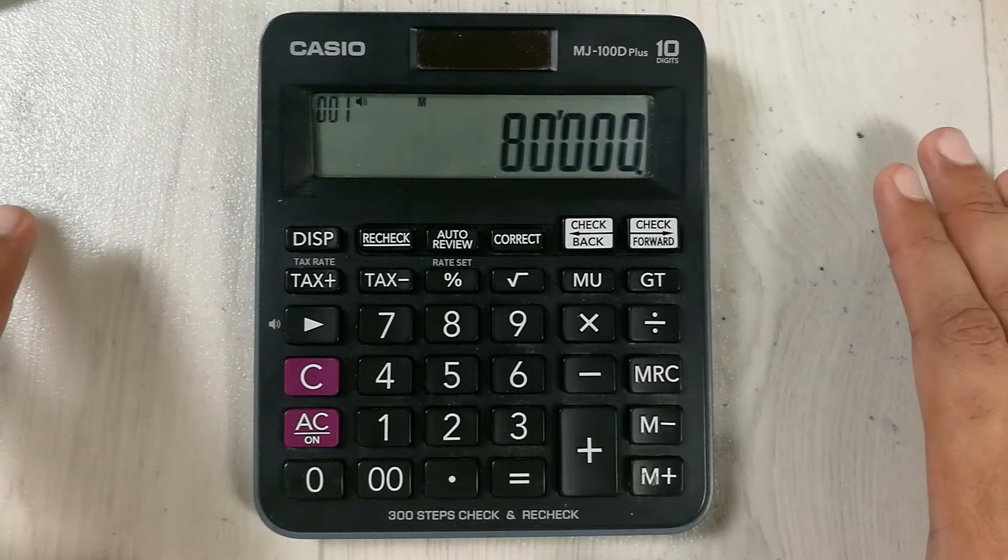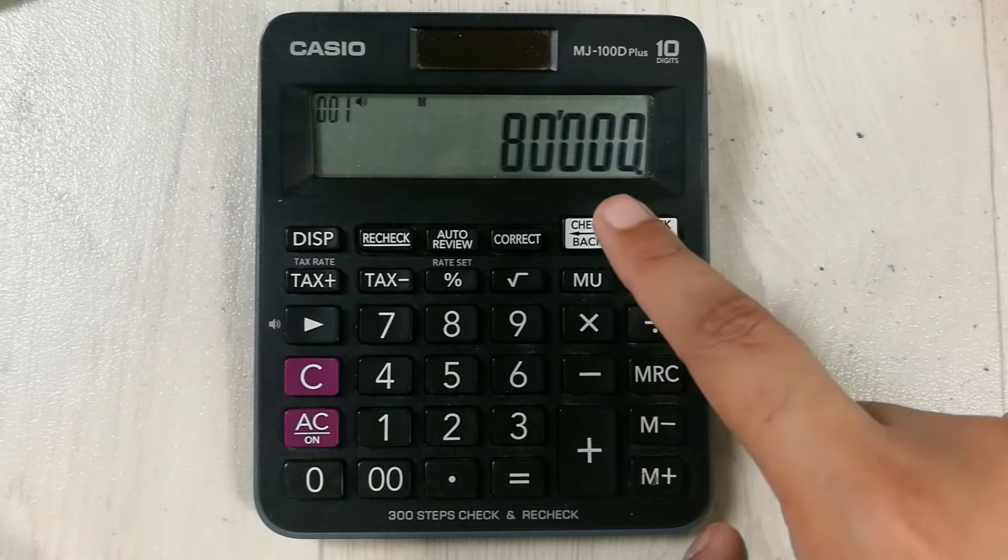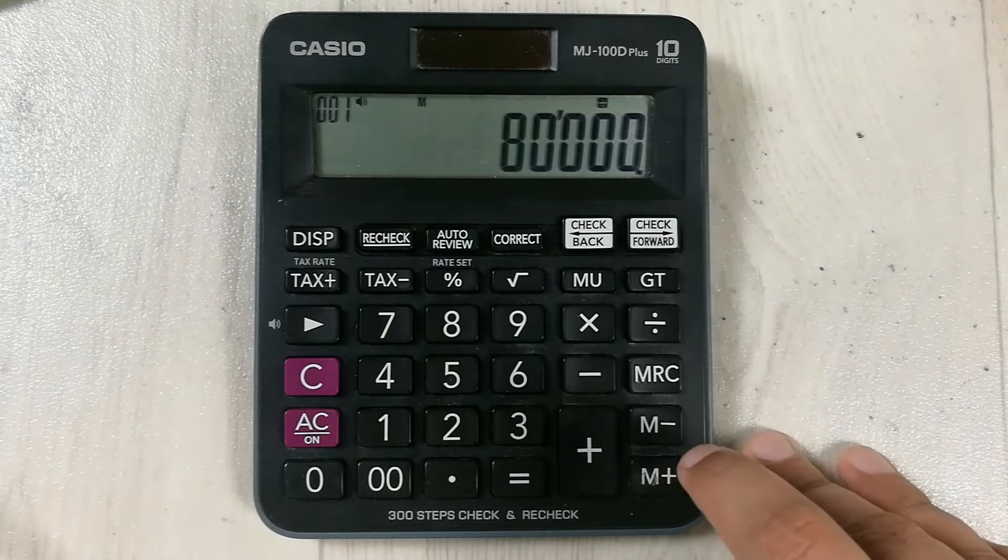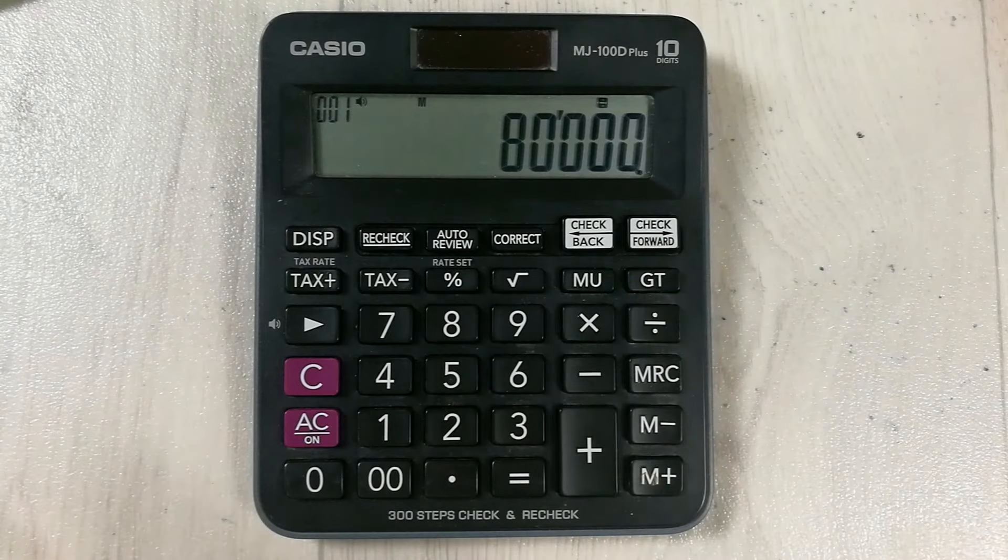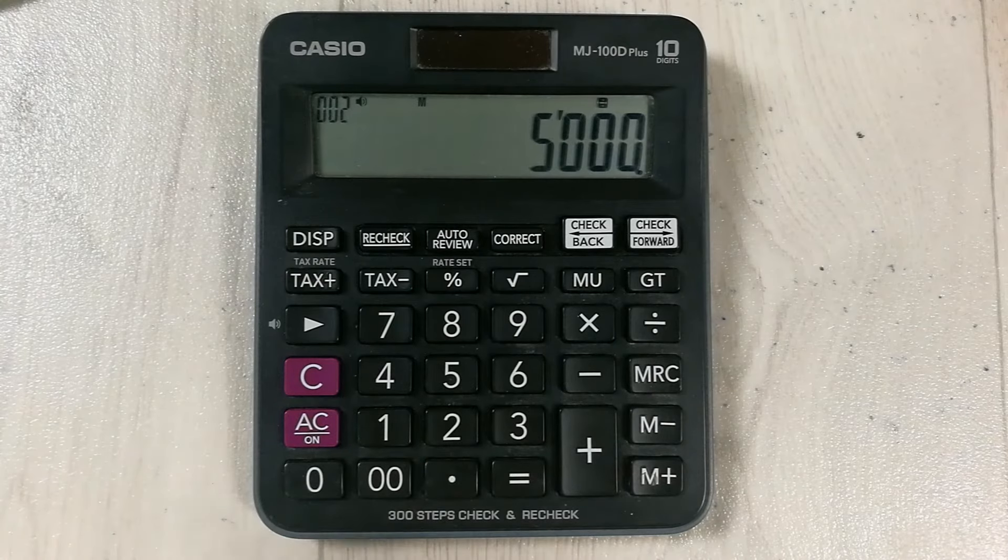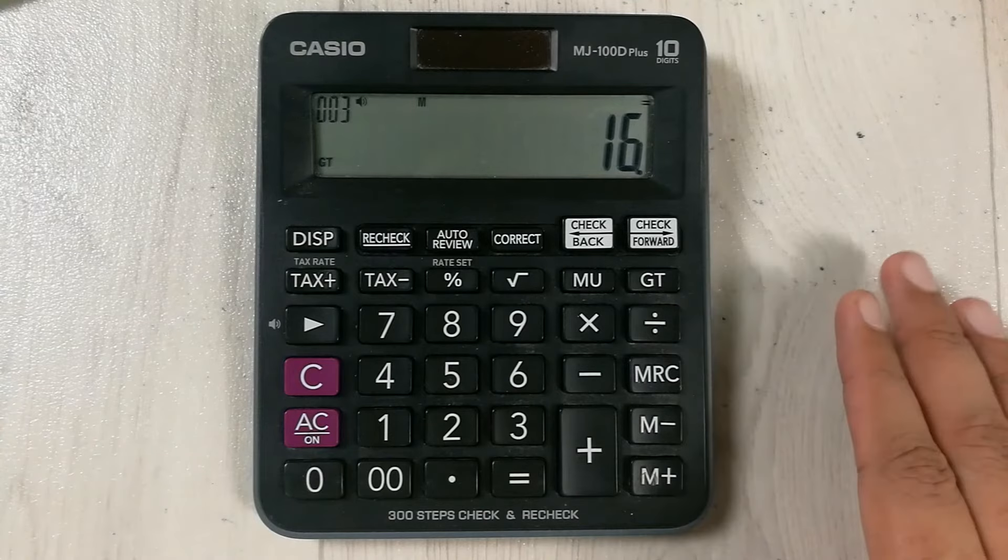So we divide 80,000 with 5000, then we press equal. So it means 16 dollars or 16 rupees is the sales per square foot.